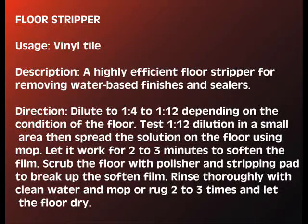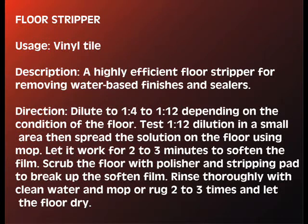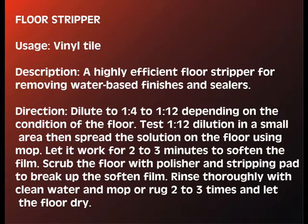Floor Stripper. Usage: Vinyl tile. Description: A highly efficient floor stripper for removing water-based finishes and sealers. Direction: Dilute 1:4 to 1:12 depending on the condition of the floor. Test a 1:12 dilution in a small area, then spread solution on the floor using a mop. Let it work for 2 to 3 minutes to soften the film. Scrub the floor with a polisher and stripping pad to break up the softened film. Rinse thoroughly with clean water and mop 2 to 3 times, then let the floor dry.